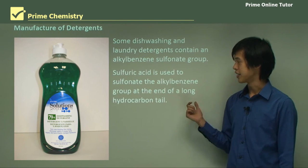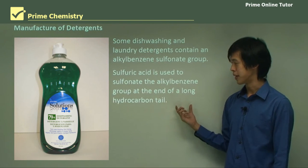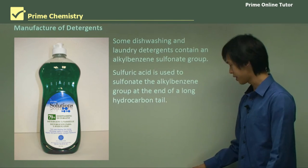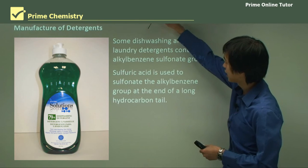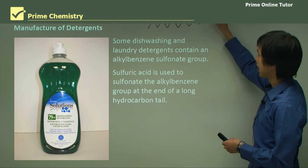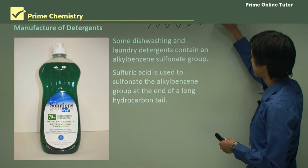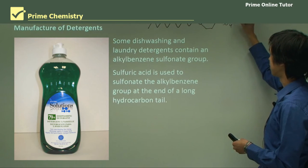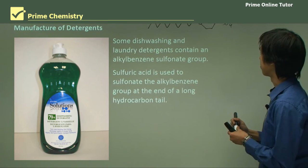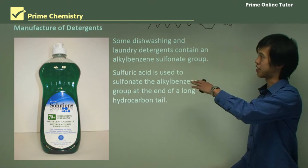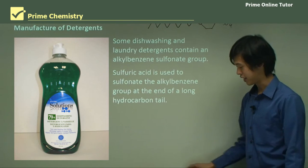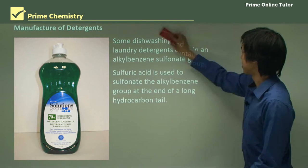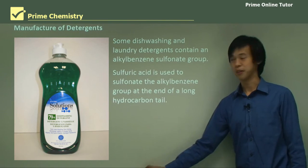The sulfuric acid is used to sulfonate the alkyl benzene group at the end of a long hydrocarbon chain. You've got this long carbon chain, you add a benzene group — the hexagon — and then there's an SO₄⁻ group attached. That's what the detergent is. In future lessons we'll talk about how detergents work.